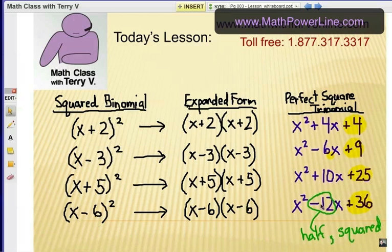So in completing the square, we take half of the middle term and we square the result. So it's a half-squared type of rule.